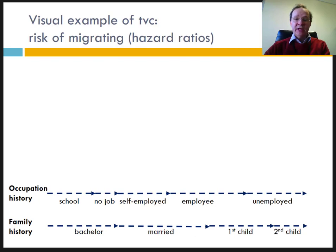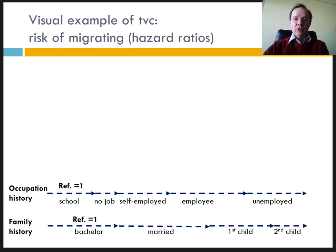Note that periods of change of activity do not necessarily correspond to periods of family change. The Cox model provides us with the hazard ratios for family status as well as for occupation. These risks are measured relative to a reference category: single for family status, and at school for occupation.